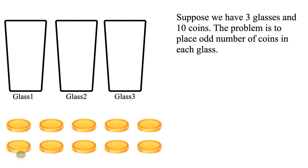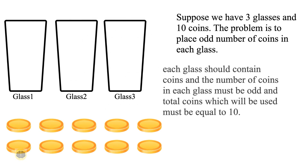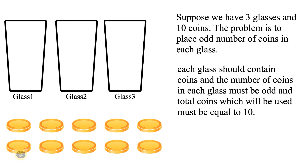Suppose we have 3 glasses and 10 coins. The problem is to place an odd number of coins in each glass. That is, each glass should contain coins, the number of coins in each glass must be odd, and the total coins used must equal 10.